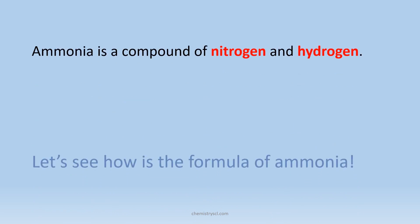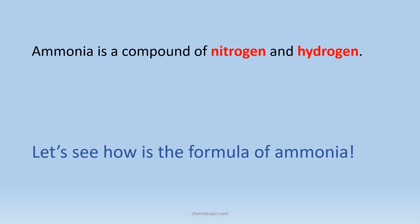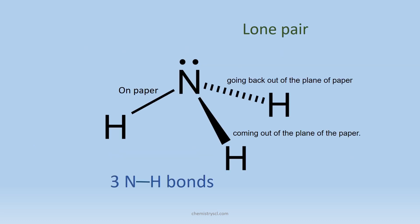Let's see the formula of ammonia. Here it is. In the ammonia molecule there are three N-H bonds and one lone pair on the nitrogen atom.